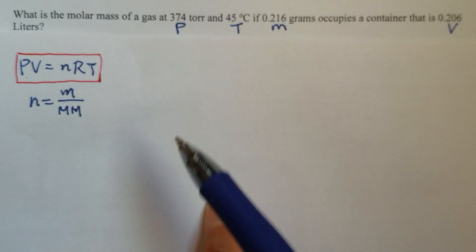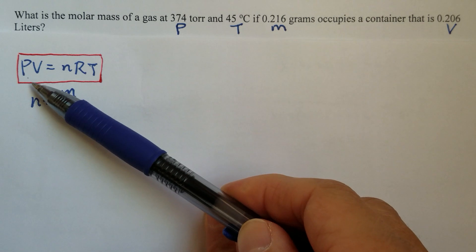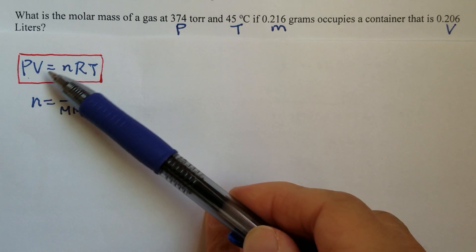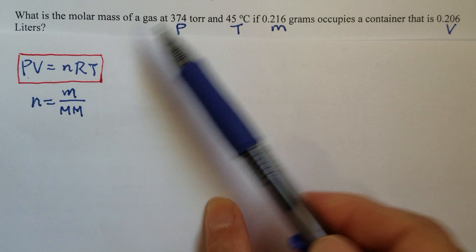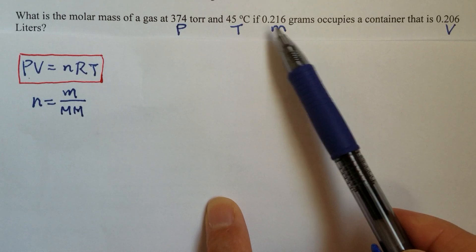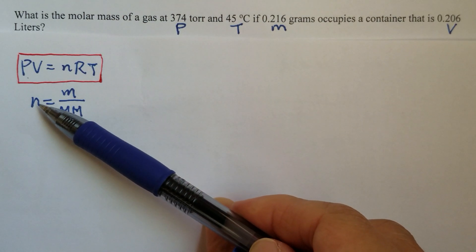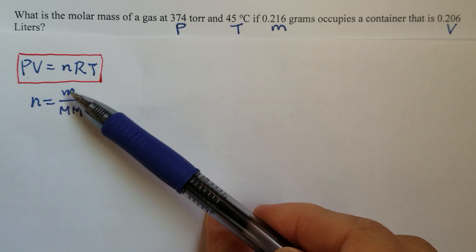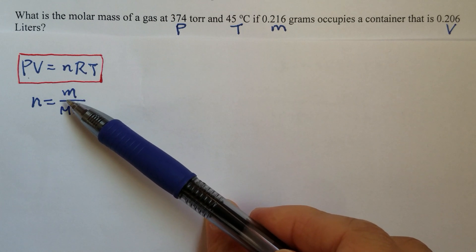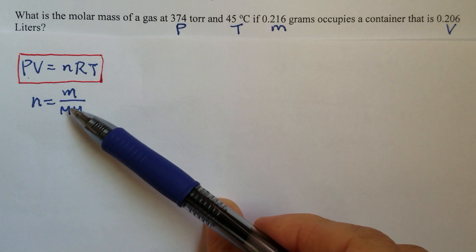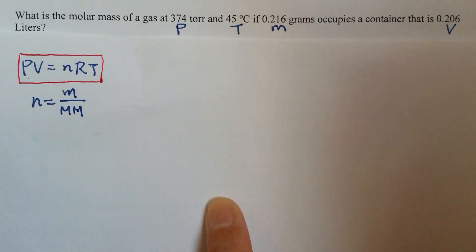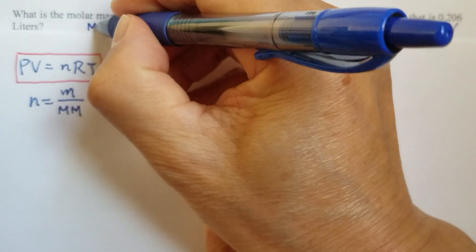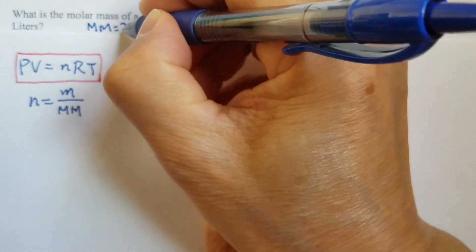We can start with the ideal gas law equation, PV equals nRT. Since the mass is given, we can write the number of moles equals mass over the molar mass. The molar mass is what we need to find out.